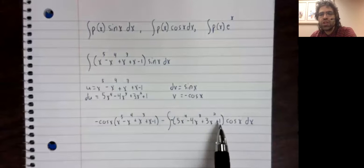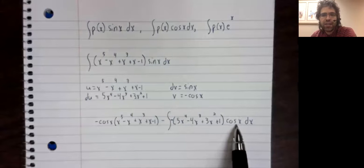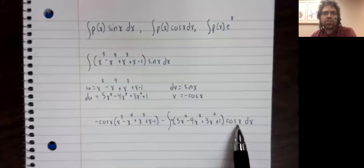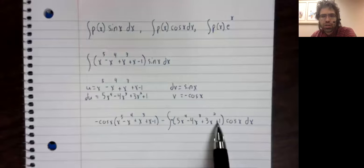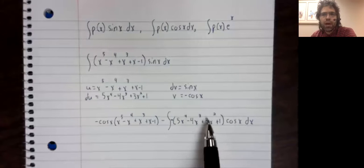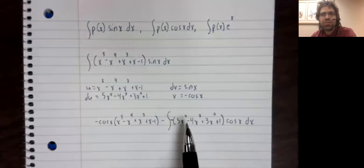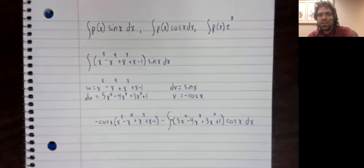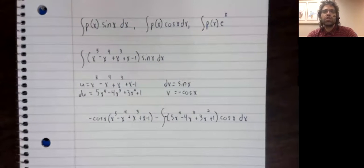You could use integration by parts again, and that would give you an integral with a third degree polynomial and a sine. Integrate by parts again, integrate by parts again. You'll get a constant and a cosine, and you'll be able to compute that integral. It should be pretty clear that that is a lot of work that we would rather not do. So we've got this shortcut.